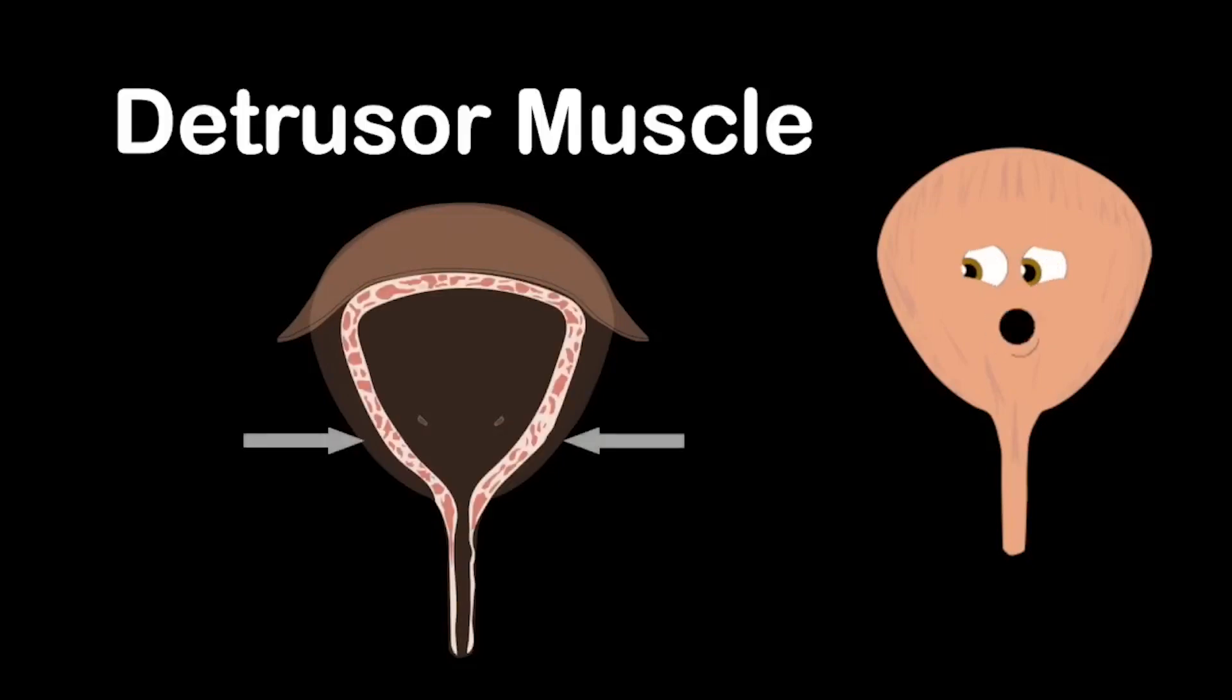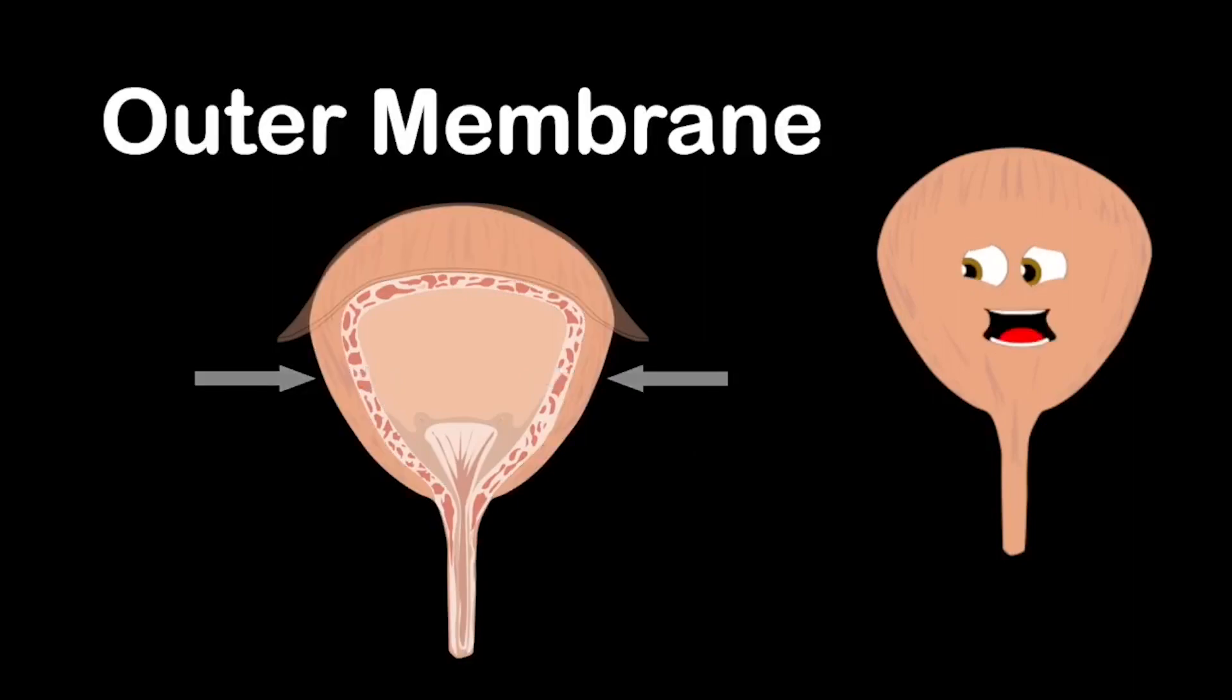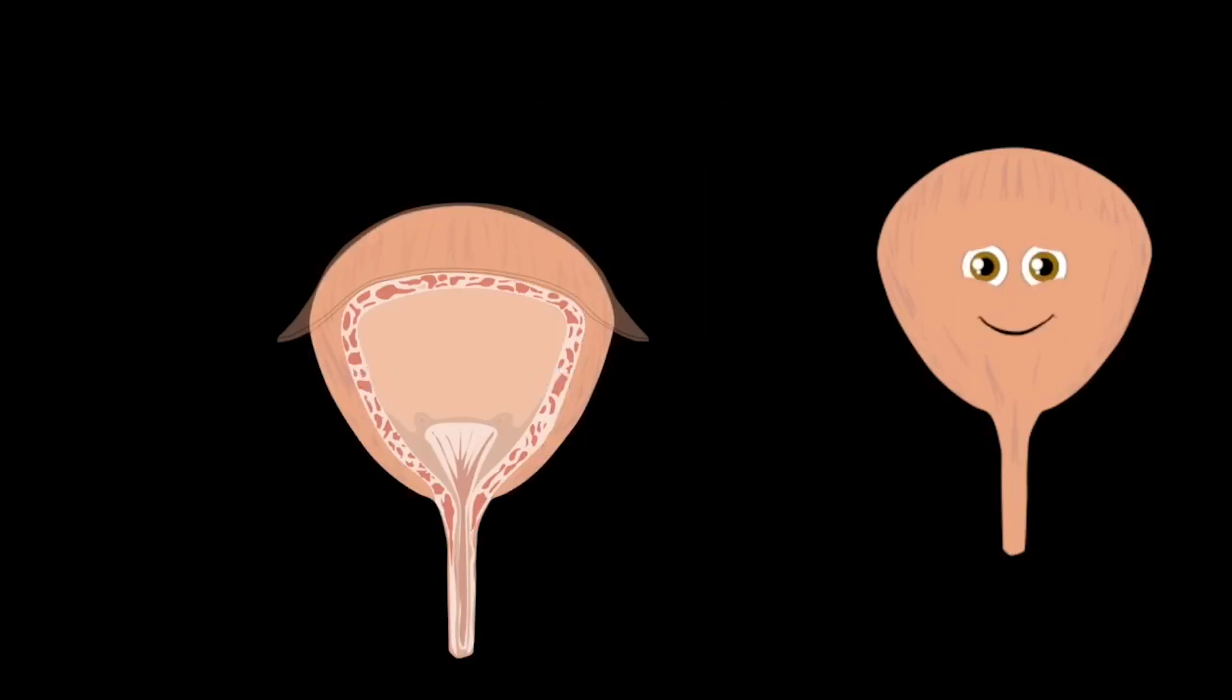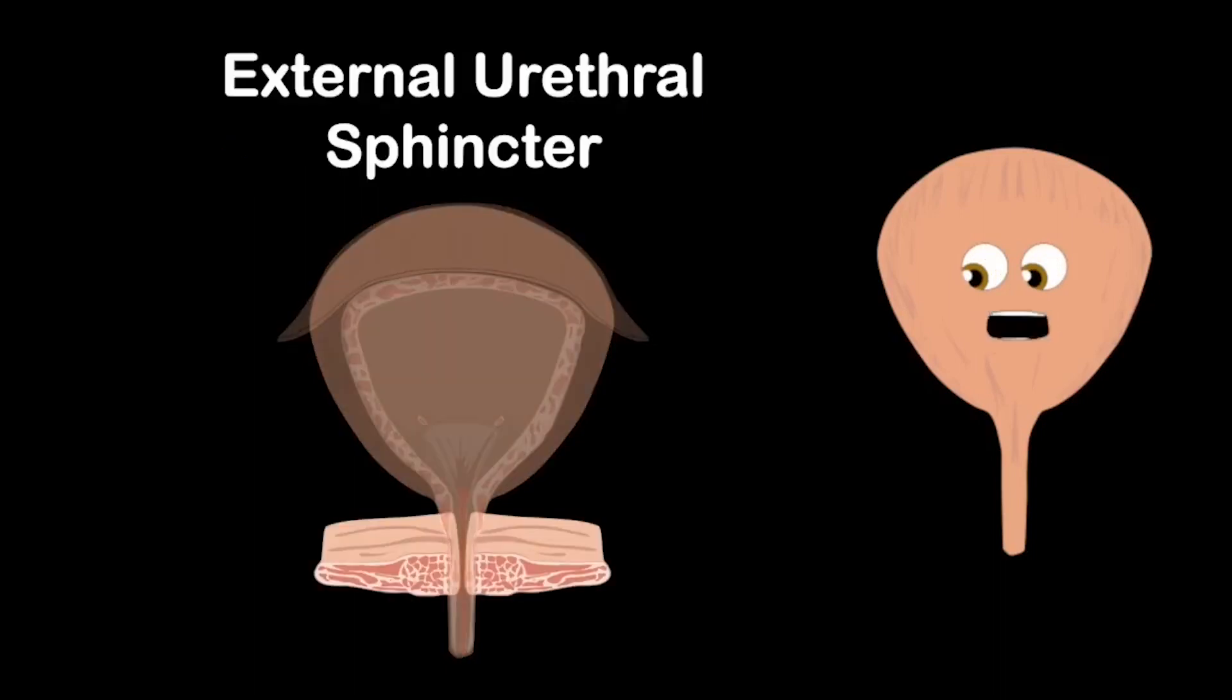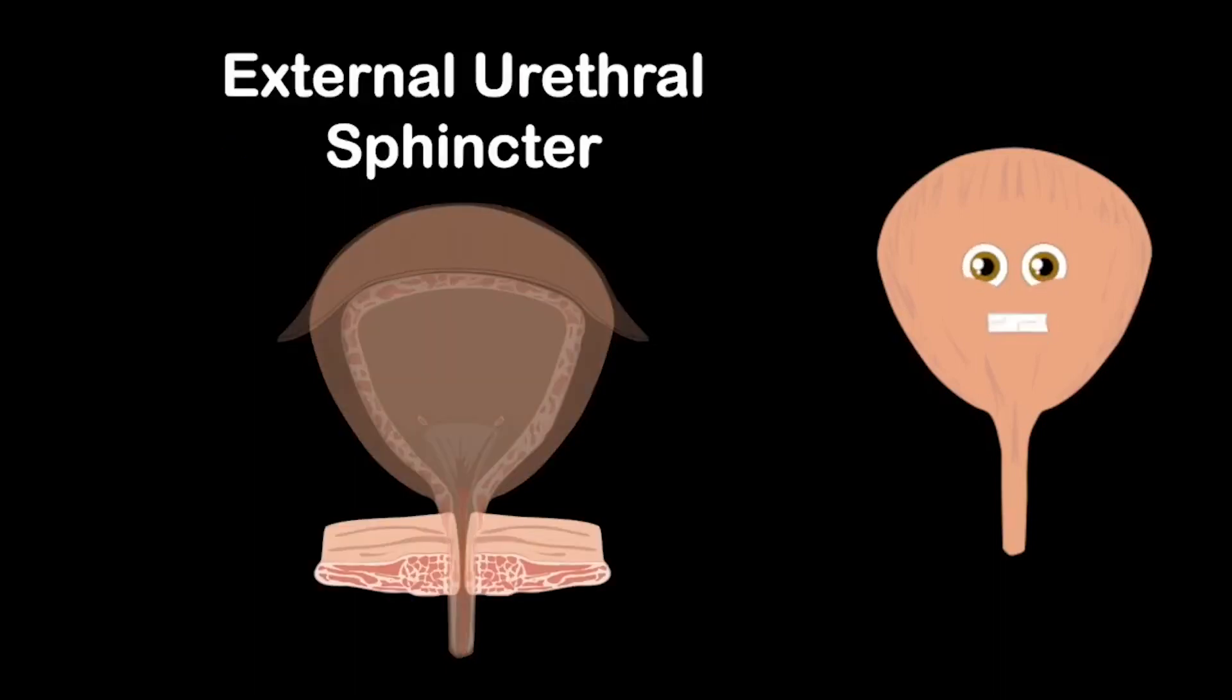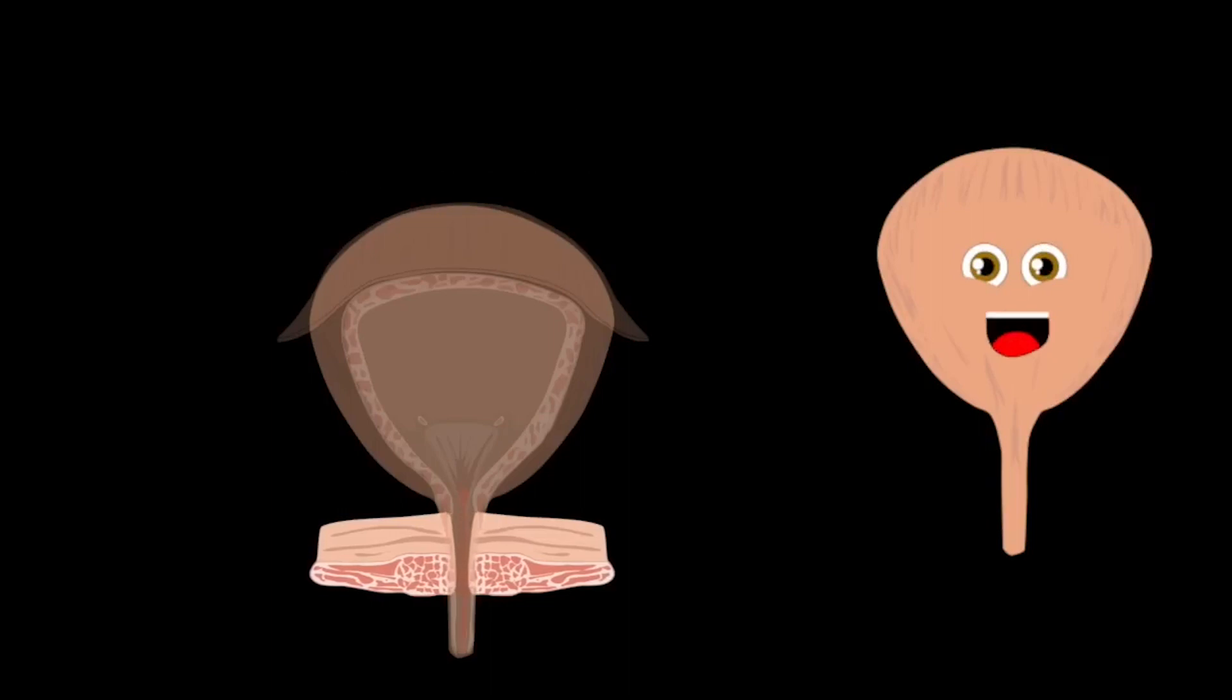The detrusor muscle controls the bladder's fluid flow lined with inner mucosa encased in outer membrane though. The urethral sphincter allows all the waste urine into the urethra where urination does begin. The external urethral sphincter is what you control to allow the amount of urine you put in the toilet bowl.